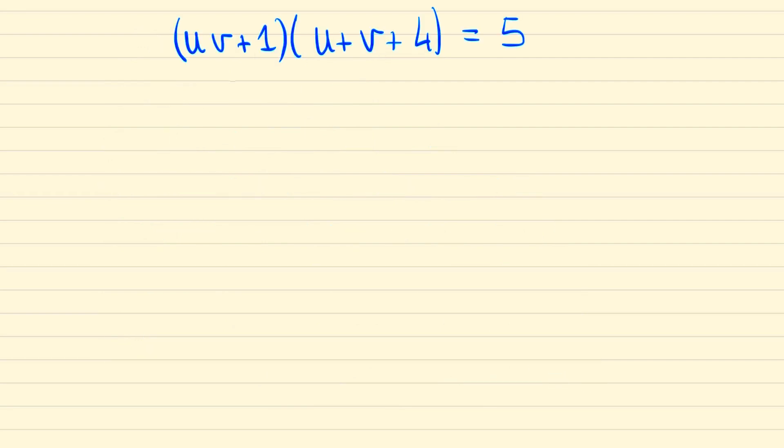And so now we have four cases to check. We could have that this bracket could be plus or minus one with plus or minus five, or plus or minus five and plus or minus one. So writing out all four possible scenarios we end up with the following.